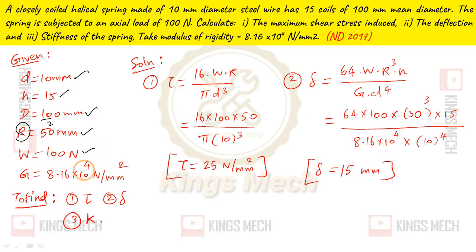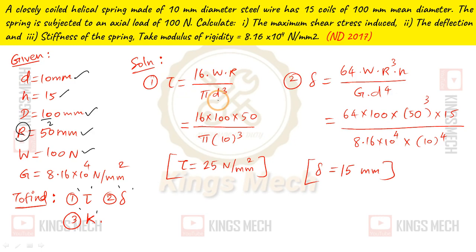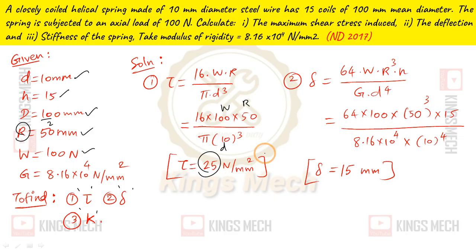W = 100 N. Now finding shear stress: shear stress tau equals 16WR divided by pi d cubed. Substituting W = 100, R = 50, d = 10, we get tau = 25 N per mm square.